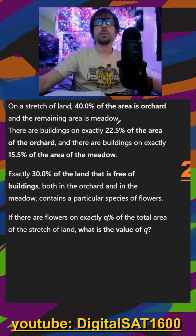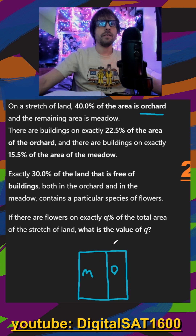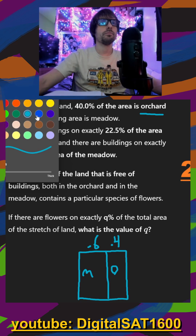On a stretch of land, 40% of the area is orchard and the remaining 60% is meadow. So we can try to draw that down below here. We have a piece of land — we have orchard, we have meadow — and this is going to be 40%, which means this should be about 60%.